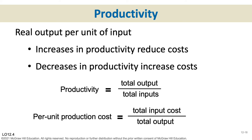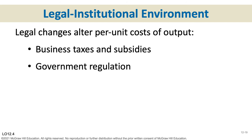Per unit production cost is measured as total input cost divided by total output. That gives us our per unit production cost. Additionally, the legal and institutional environment matters — if the government institutes some new law or policy, perhaps an environmental protection agency policy that affects businesses or changes business taxes, that will also shift the supply curve right or left.